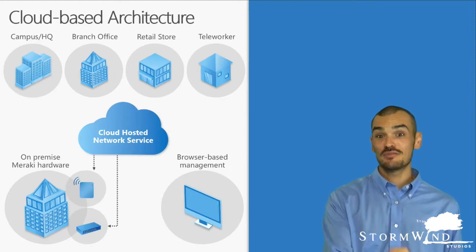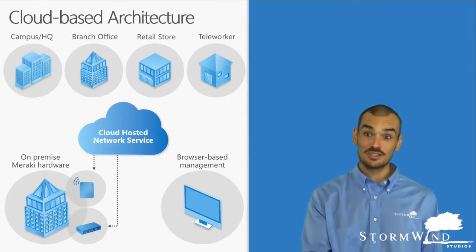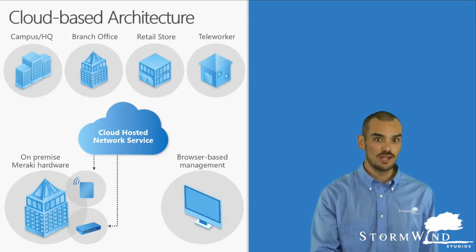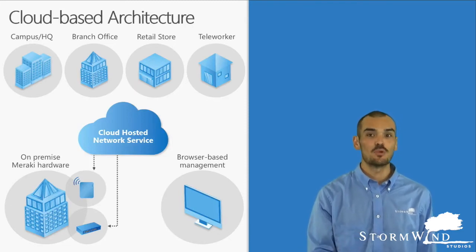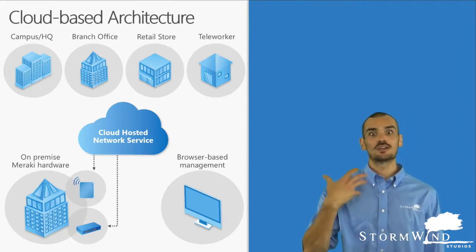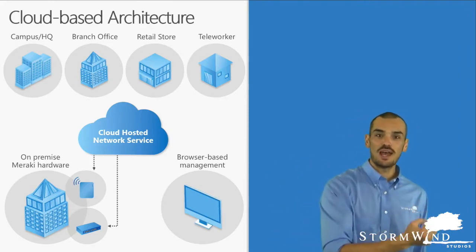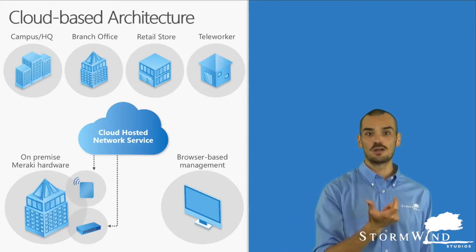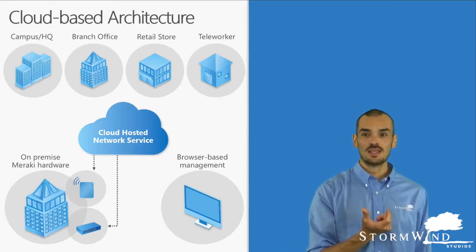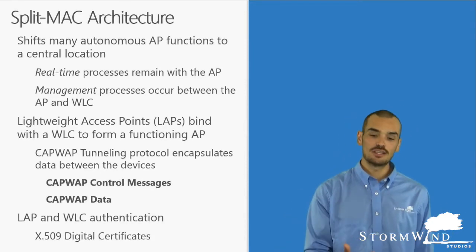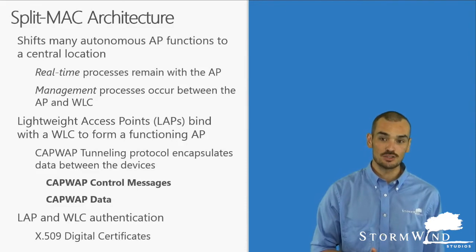With a traditional autonomous architecture, you have to go into each device individually to change its settings. With the cloud-based architecture, you also get the ability to coordinate your access points, which leads more towards the split MAC architecture — where you could look at two or three access points, look at their radio settings, adjust them as needed, and they'll all work in unison. When you're talking about a large-scale deployment, you're going to want to consider that split MAC architecture.